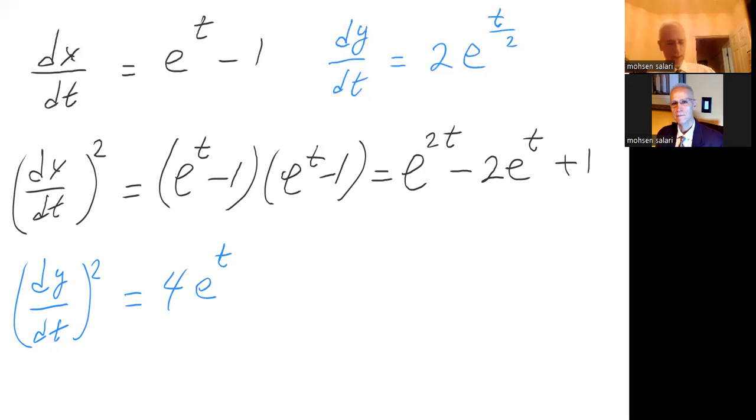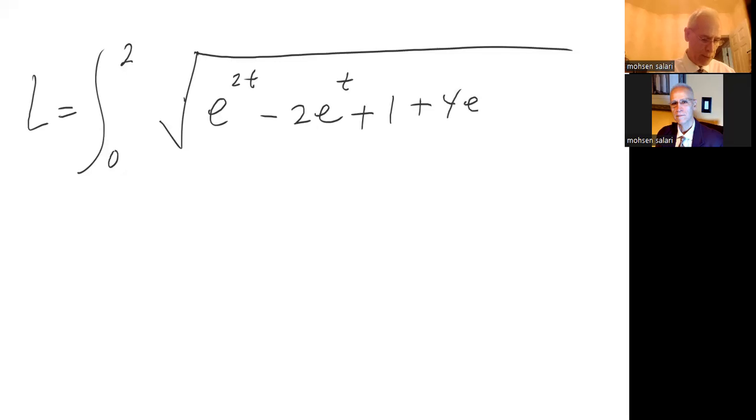Now I'm going to go ahead and plug this in my formula. I have length equals from zero to two, square root of, I have dx dt so I have e to the two t minus twice e to the t plus one, added to four times e to the t, all that dt.